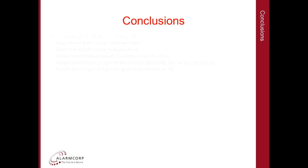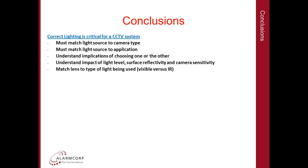Conclusions. Correct lighting is critical for a CCTV system. We need to match the light source to camera type and to the application, and understand the implications of choosing one or the other. We need to understand the impact of light level, surface reflectivity, and camera sensitivity. And finally, we need to match the lens to the type of light being used. If we're using visible light, we don't need an IR-corrected lens. Likewise, if we have a camera that is not sensitive to IR, we don't need an IR-capable lens. However, if we do have a day-night camera and we are using light with an infrared component, we must use an IR-corrected lens.